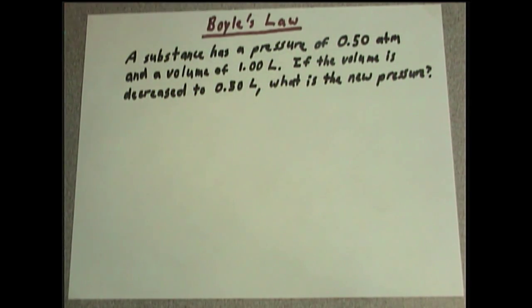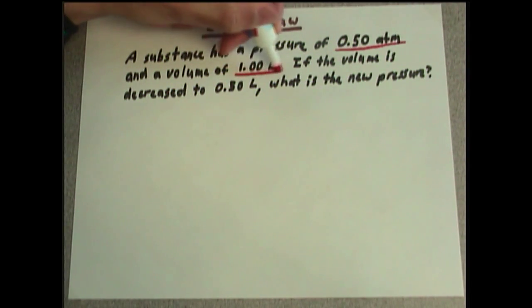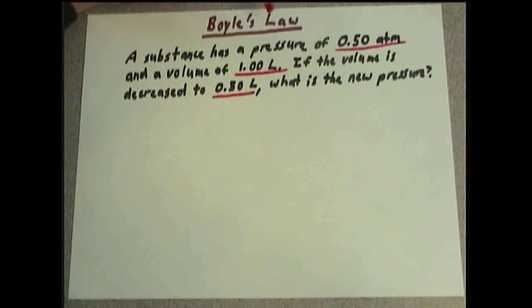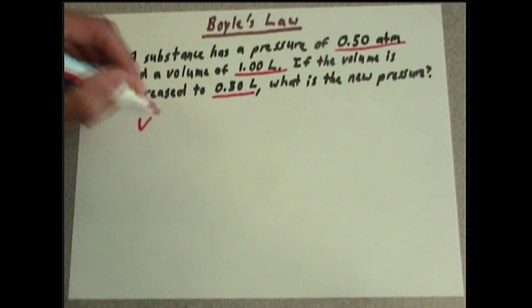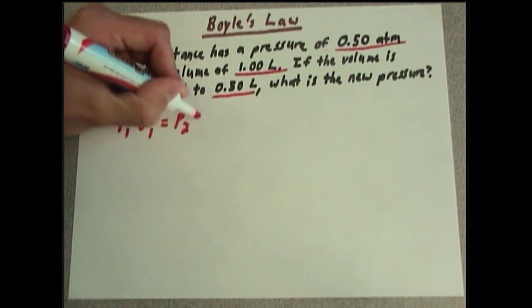When you read this problem, you notice a couple of things. First of all, we have one pressure and we have two volumes. So this immediately tells us that we're going to be using Boyle's Law. And if you recall, that is P1V1 equals P2V2.